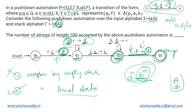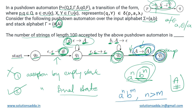At least one A must be left on the stack to move to the final state. This means we are not accepting equal numbers of a's and b's. The language being accepted is of the form a^n b^m where n is greater than m — there must be more a's than b's. Any number of extra a's is allowed, since we only check if at least one A remains on the stack; there is no loop checking how many are left.